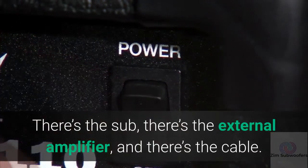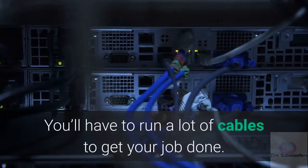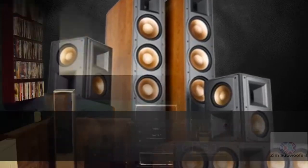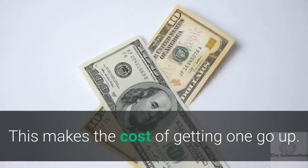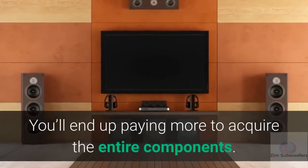There's the sub, there's the external amplifier, and there's the cable. You'll have to run a lot of cables to get your job done. Passive subwoofers don't come by themselves often. You'll get them as part of a home theater system. This makes the cost of getting one go up. You'll end up paying more to acquire the entire components.